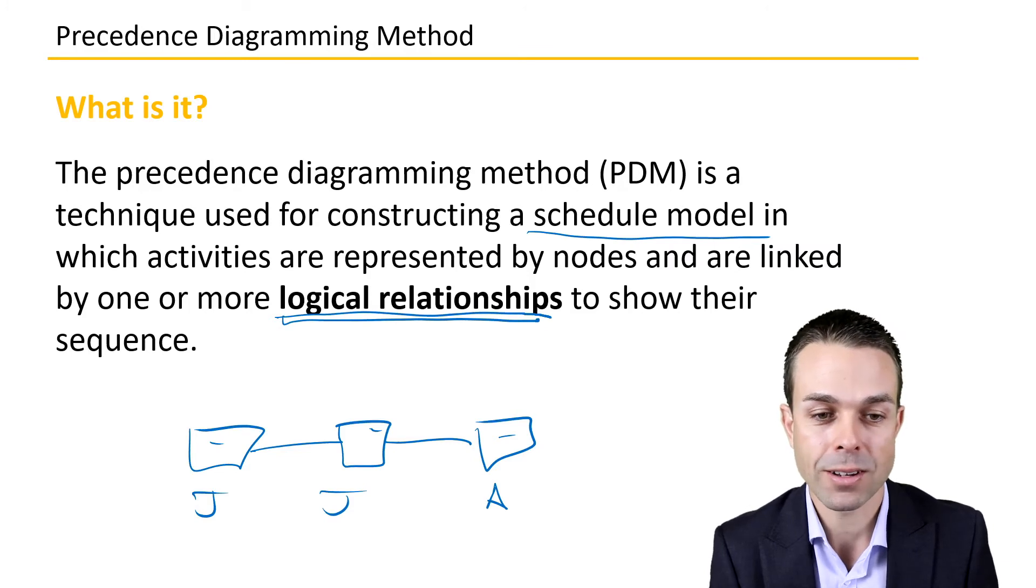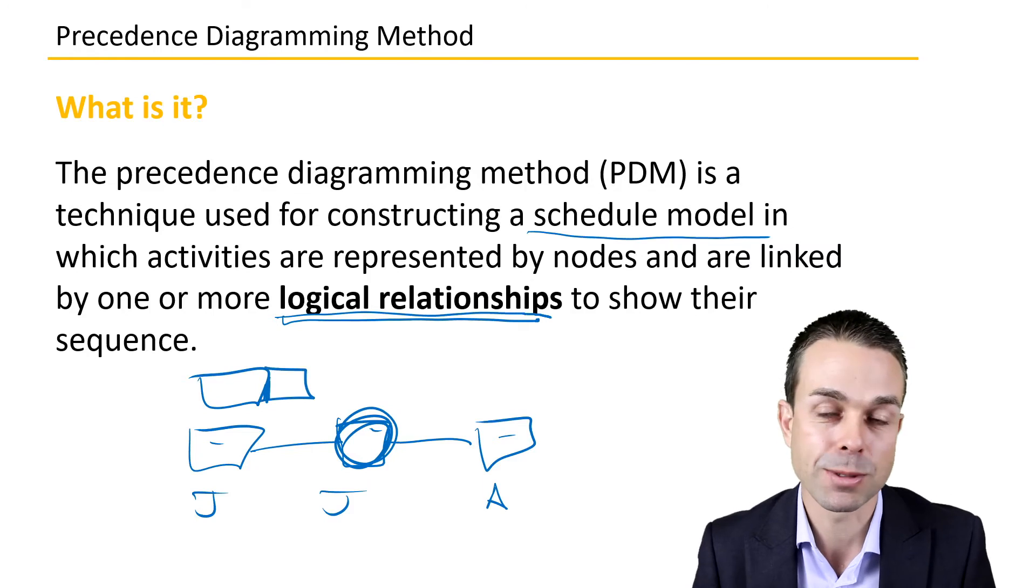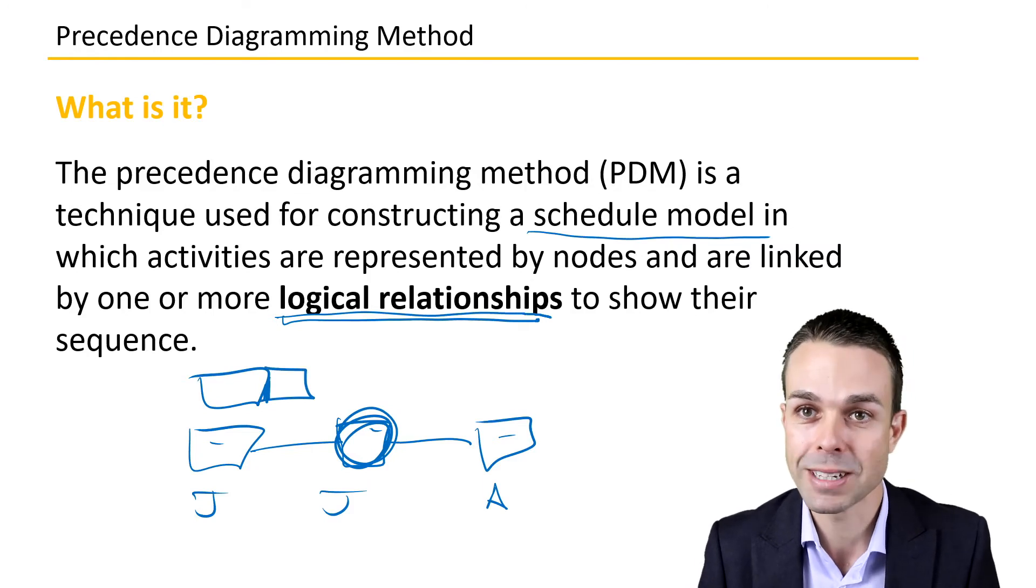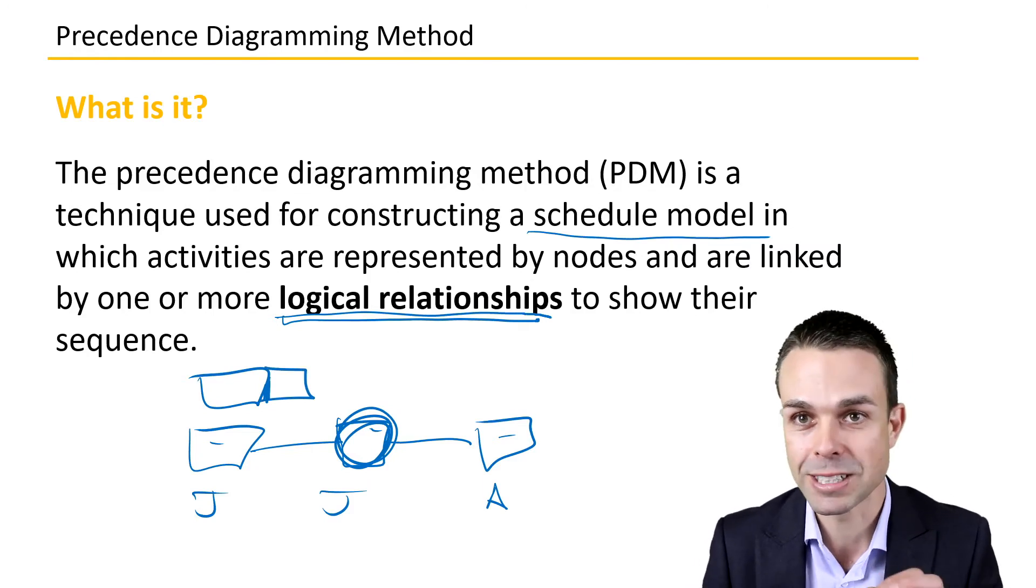What can start when this one starts, and what needs to happen? For example, maybe this one needs to finish before this one can finish. The PMBOK guide goes into these logical relationships in more detail as part of the Precedence Diagramming Method.